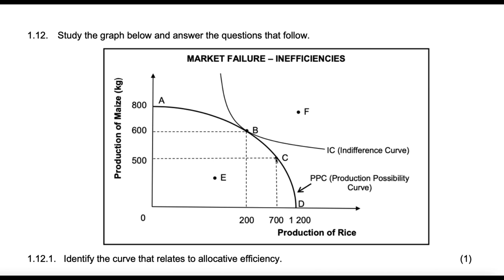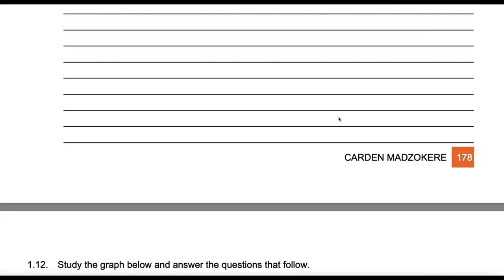C is okay productively, but allocatively it's not okay. A is not good either, and for the same reason as C. F would be nice, but unfortunately it's unattainable — and it wouldn't actually be nice because it's also not allocatively efficient. So F is productively impossible and allocatively inefficient, so it's not nice at all.